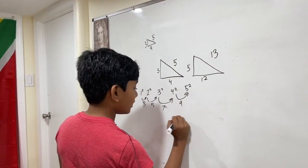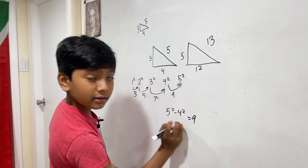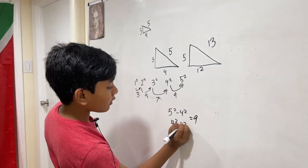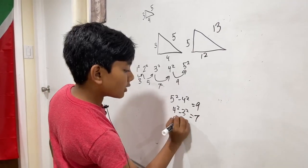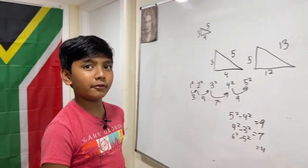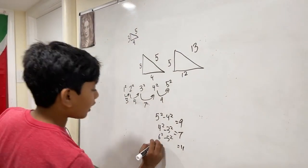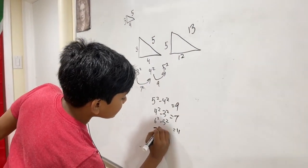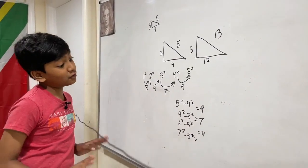Something neat to realize is that 4 squared minus 3 squared, what is 4 plus 3? 7. 6 squared minus 5 squared, what is 6 plus 5? 11. That's something really neat. I'll see if it works for other ones, like 7 squared minus 5 squared. It does not give you 12, but still.